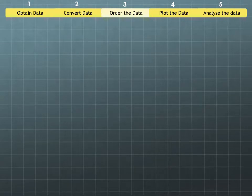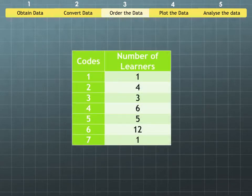The next step is ordering the data, and the easiest way to do this is to take the names out of the equation. You're not looking at individual learners, you are looking at a trend. You've got codes one to seven going down, and next to each of these codes we are saying how many learners achieved that code.